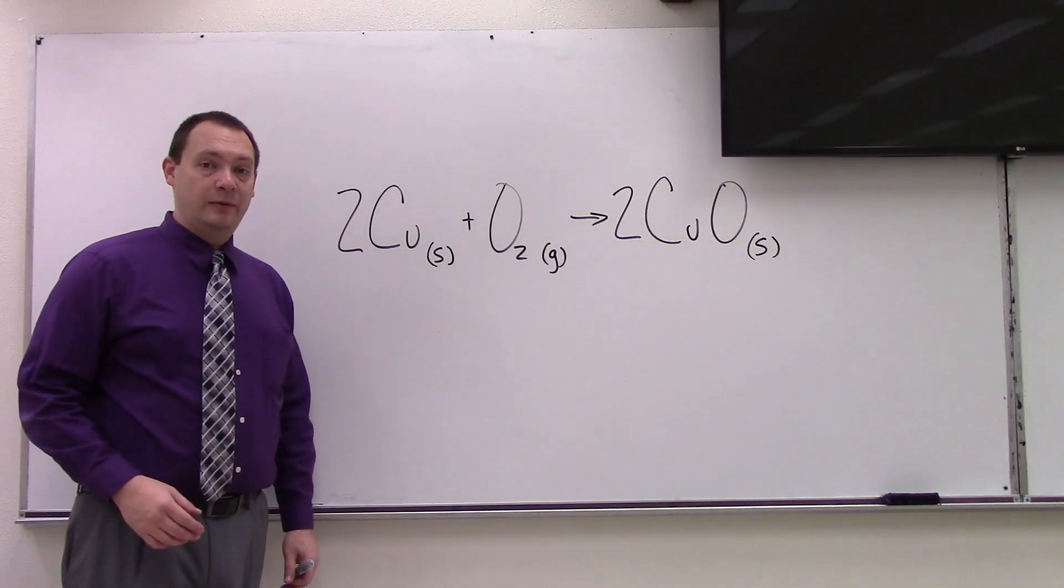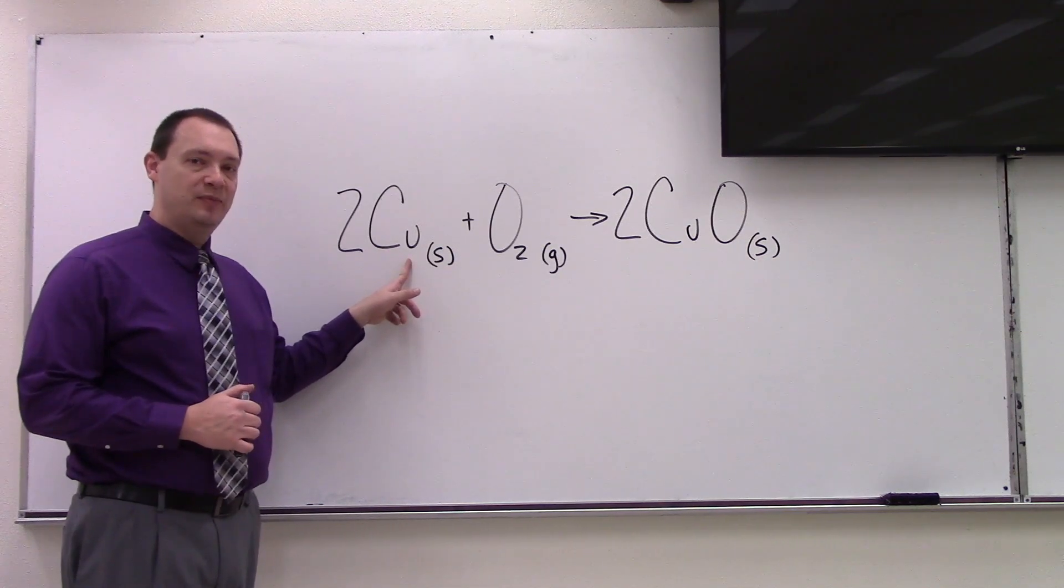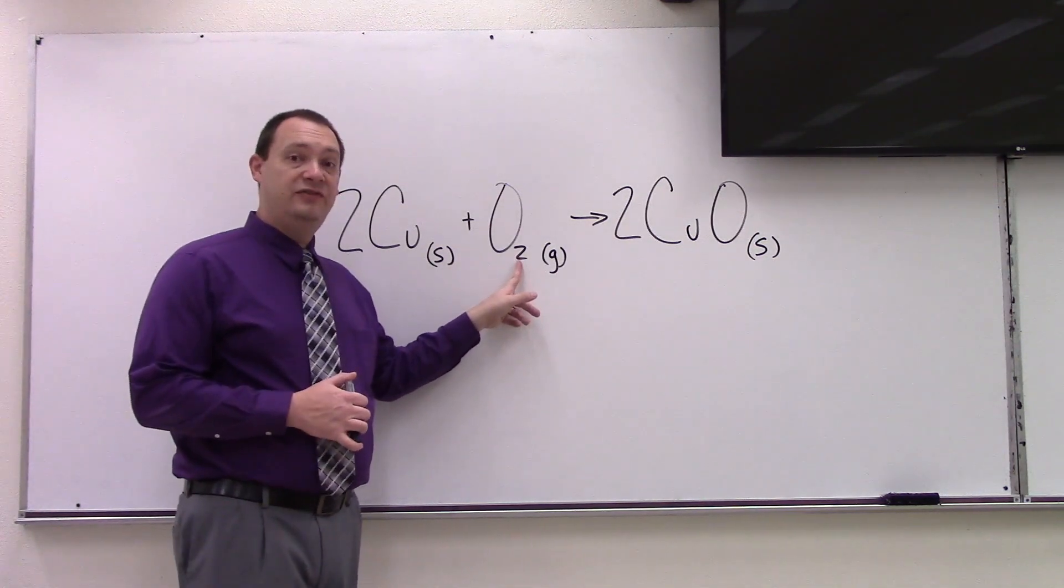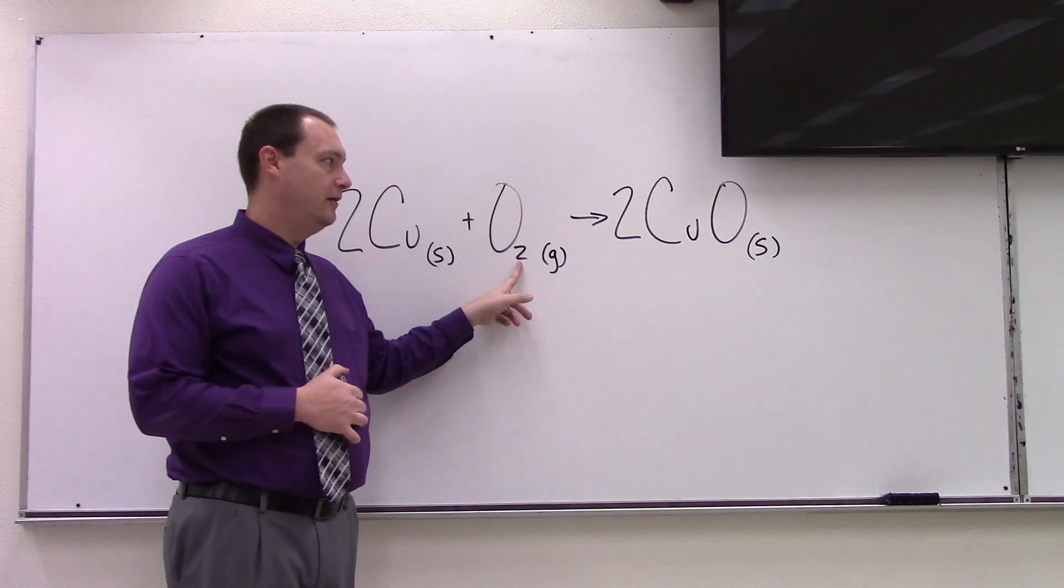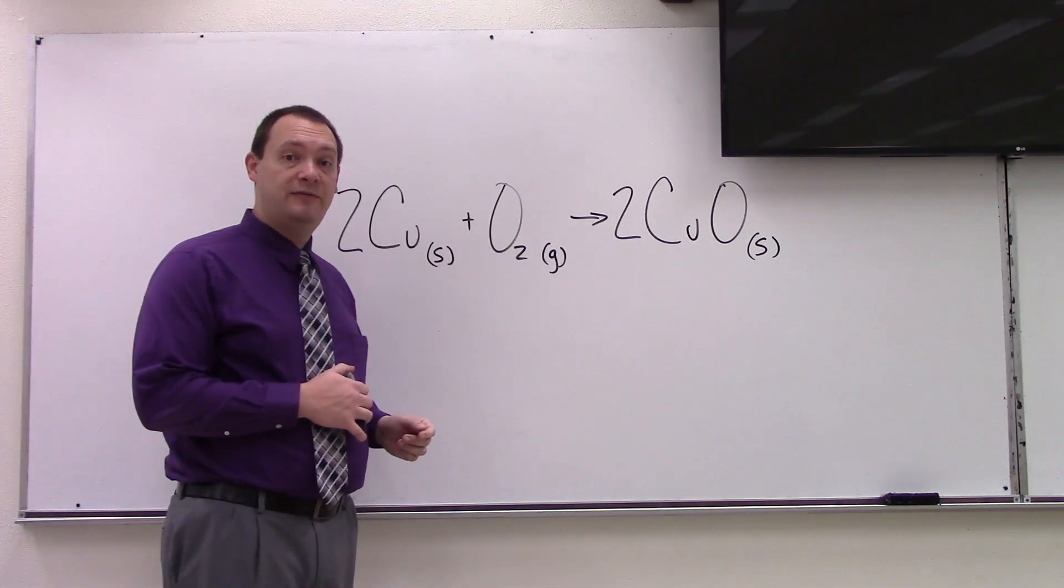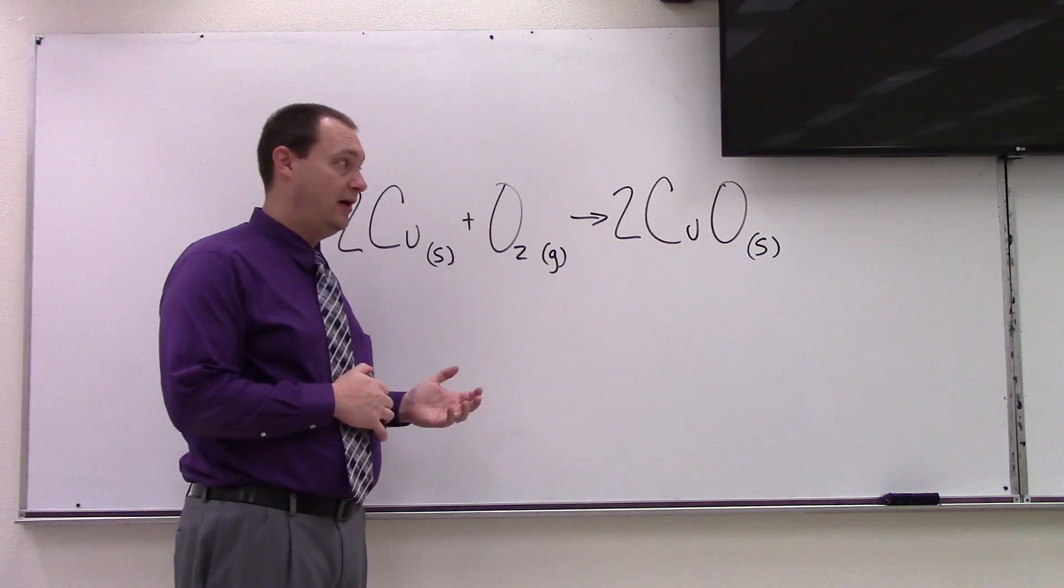The reaction we're dealing with here is between solid copper metal and oxygen gas from the air. And when those two get together, we know they're going to form the ionic compound copper oxide.